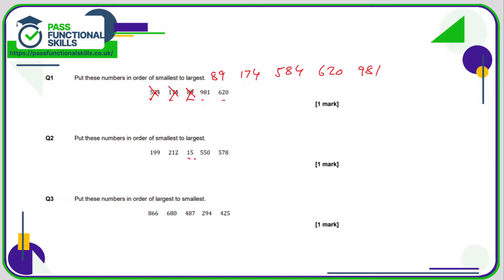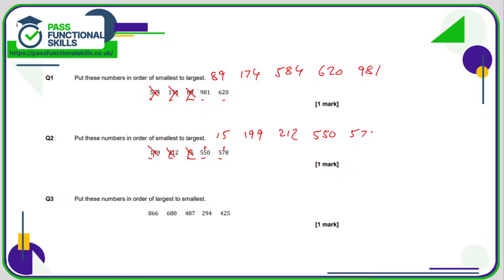Smallest to largest — we're going to start with the two-digit number, which is 15. For the remaining three-digit numbers, look at the first digit: 1, 2, 5, 5. So 1 is the smallest, so 199 comes next, followed by 212. We've got two numbers beginning with 5, so we need to look at the next digit along — here it's a 5, here it's a 7. 5 is less than 7, so 550 is smaller than 578, which is the largest number on this list.